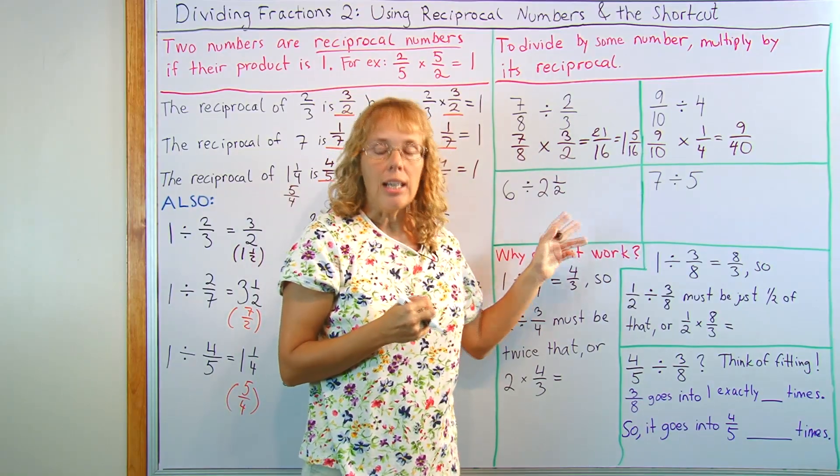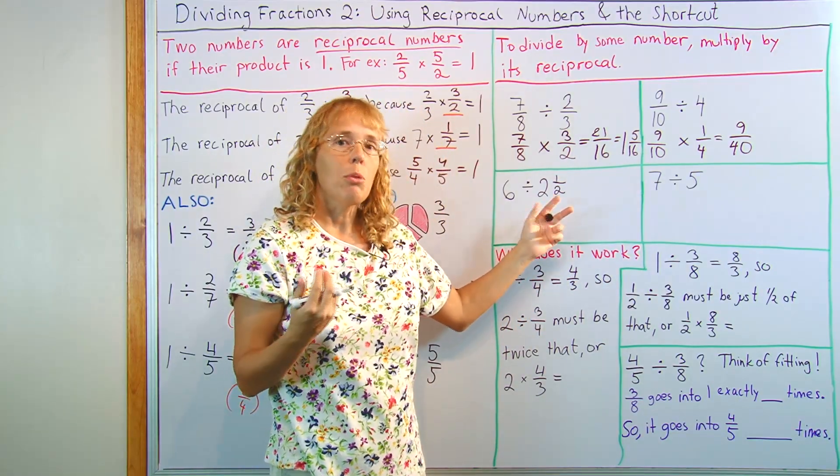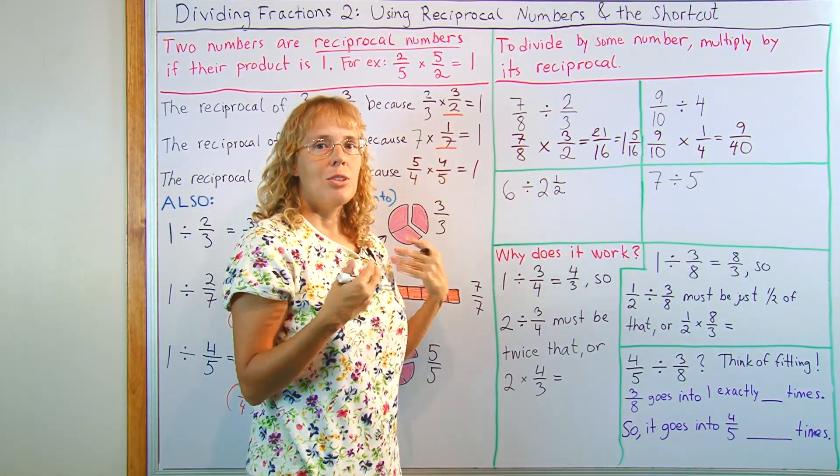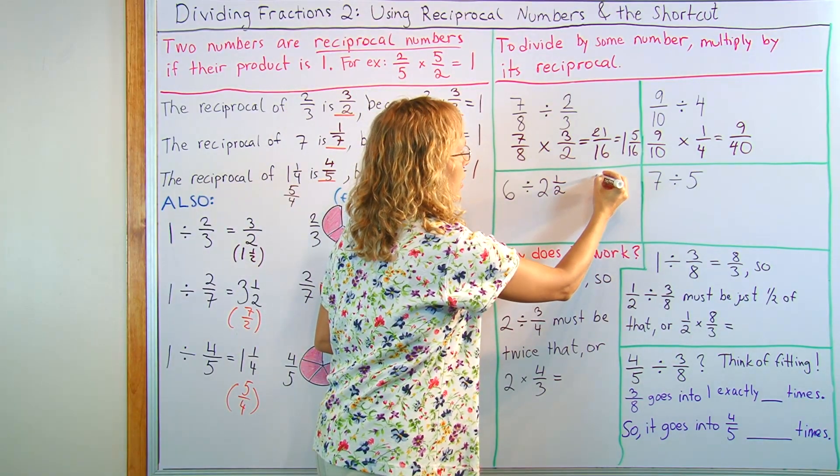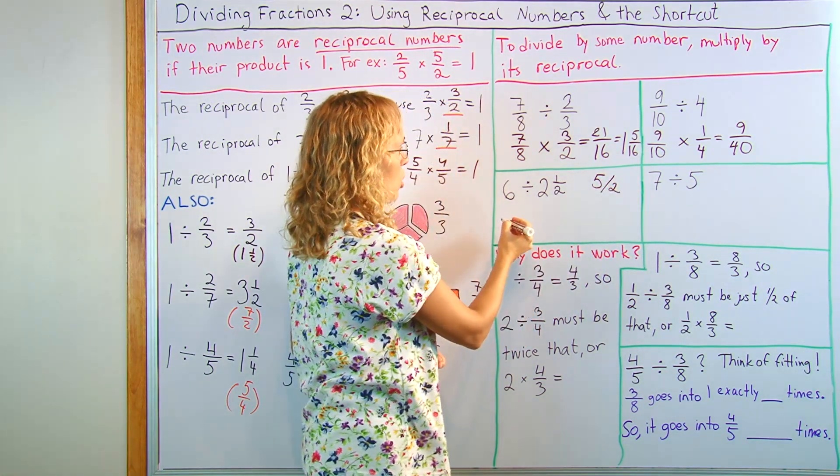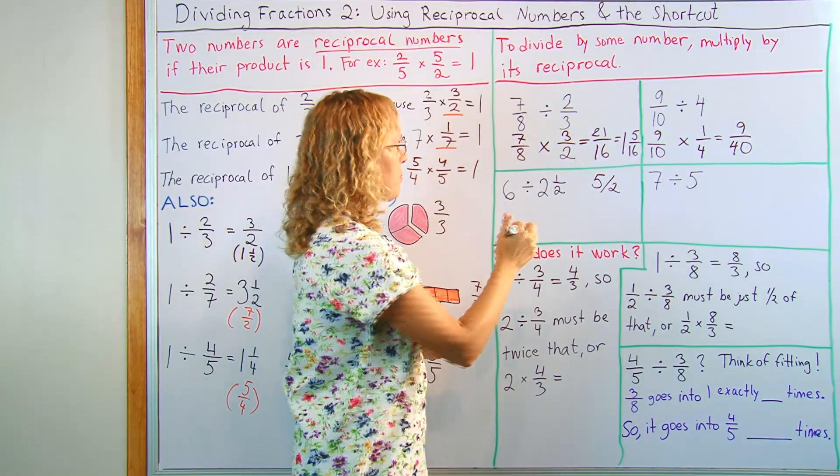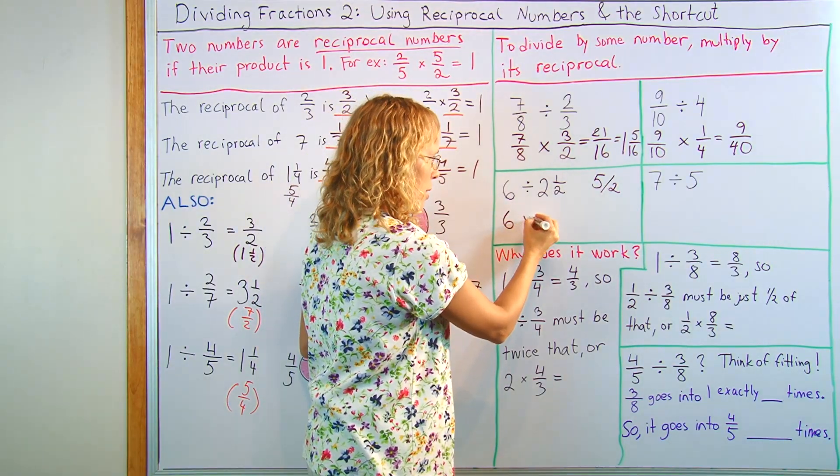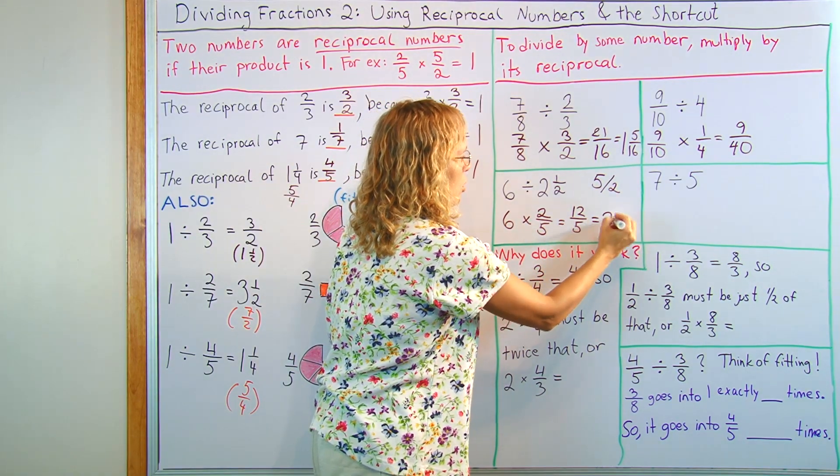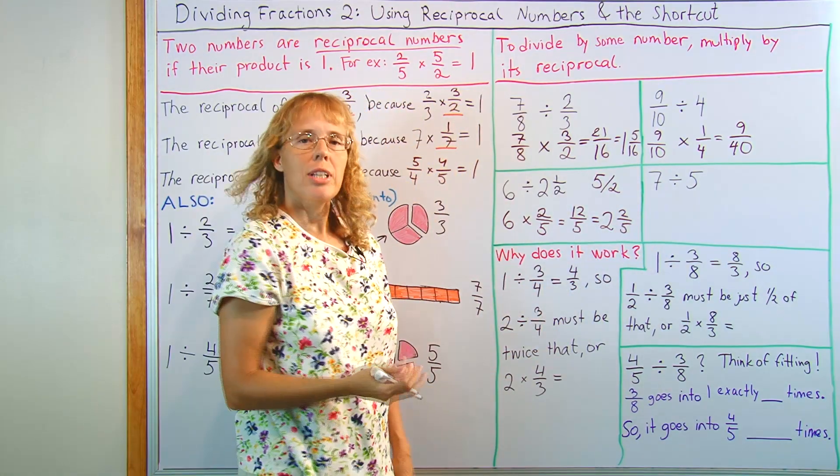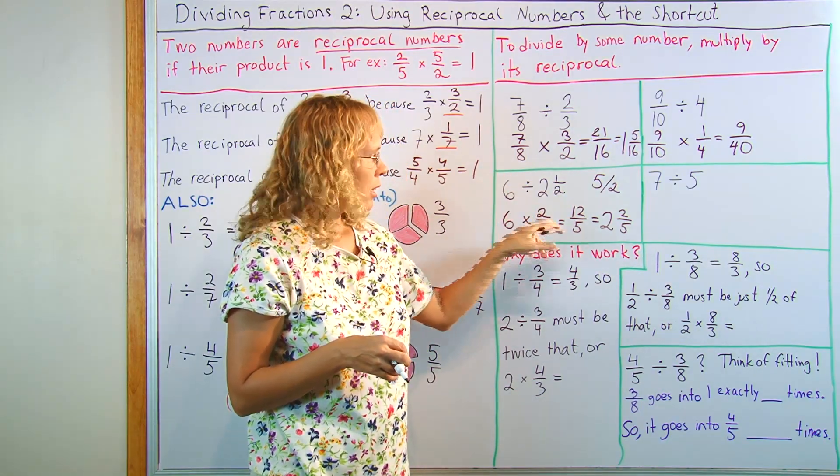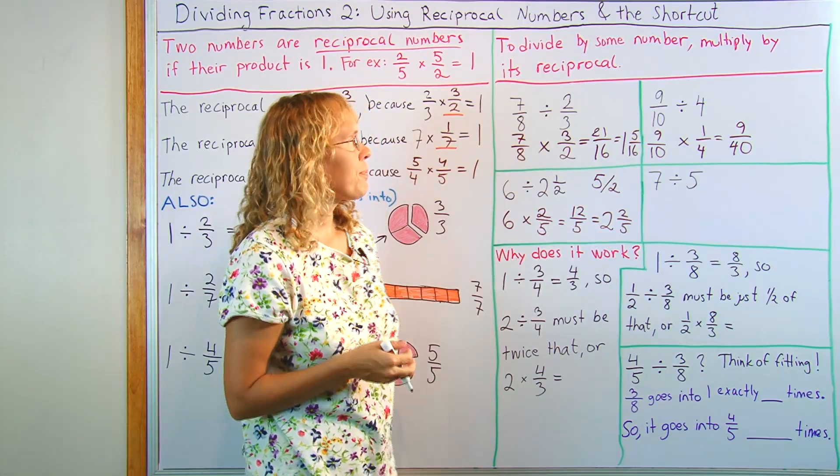Okay, six divided by two and a half. This is a mixed number. But the same rule works. You just first need to think of its reciprocal number. And for that, you probably need to change it to a fraction, okay? This would be five halves. So to flip it, it is going to be two-fifths. So we get six times two-fifths. And this is twelve-fifths, or two and two-fifths. You can, at this point, actually ask, does this answer make sense? Does two and a half fit into six a little over two times? Yes, it does.